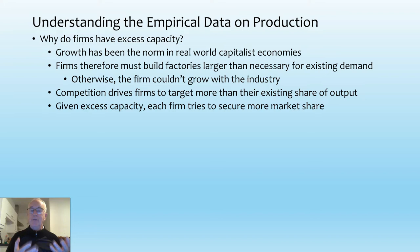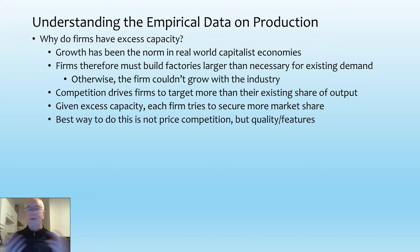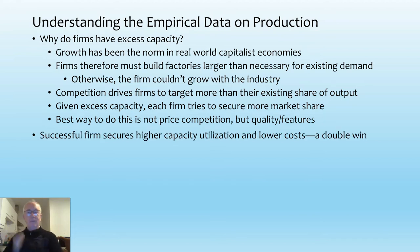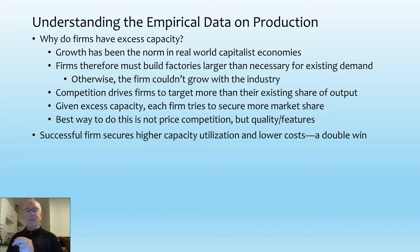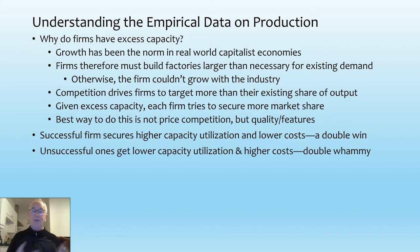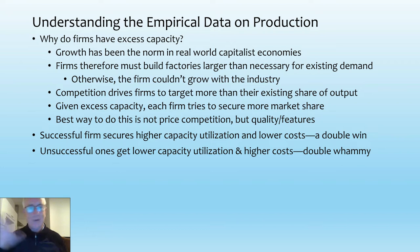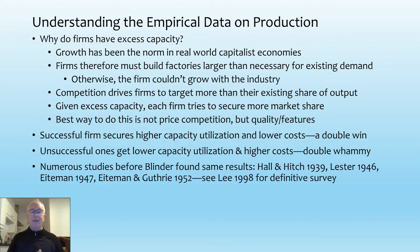So the desire to be competitively successful means the sum of capacity in the industry is greater than existing demand. You're all going to be struggling to get as much of the demand as you can — and you don't compete on price. You compete on quality and features. A successful firm, if its product is superior in various qualitative ways, will get higher capacity utilisation. Because of that higher capacity utilisation, you get lower costs, you make more profits, and you grow more than your rivals. The unsuccessful ones get lower capacity and higher costs, so they tend to drop out. What you get out of that is large firms — the norm in capitalist economies — not the myth of perfect competition.